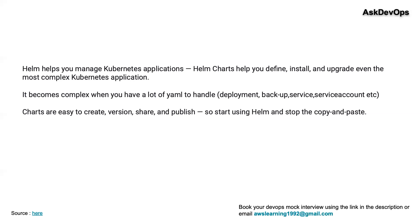Every component of your application — that is deployment, backup, service, service account, replica set — everything can be a part of a Helm chart. You can do a deployment, and not only that, you can roll it back if you don't want that deployment to go ahead. That's the power of Helm. And if you publish this chart, other people can also start using these charts.